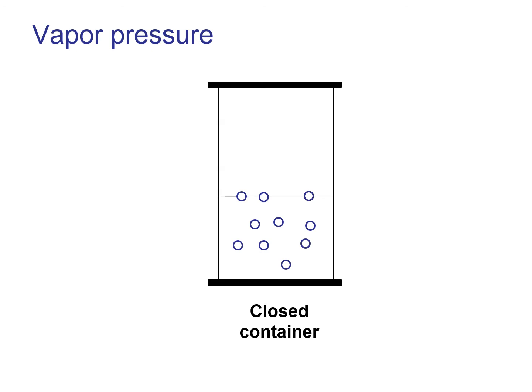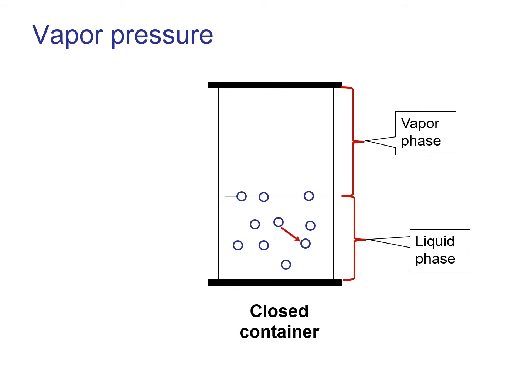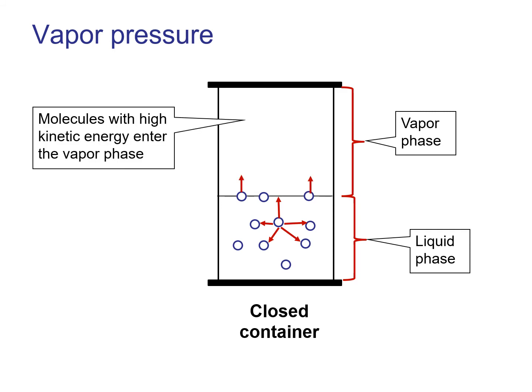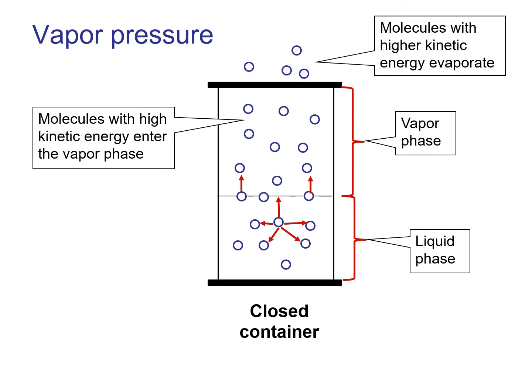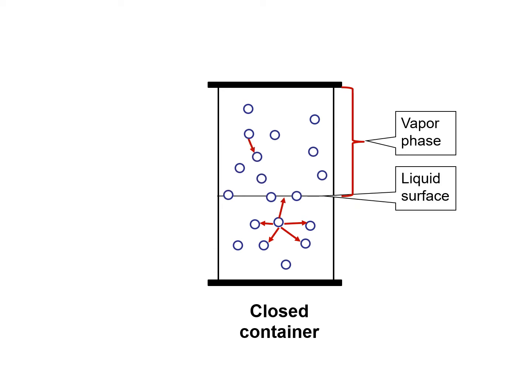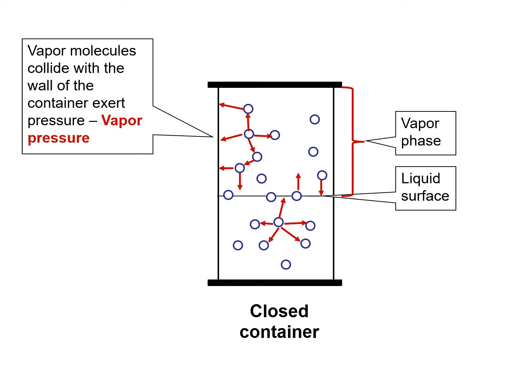What is vapor pressure? Let's say we have a closed container which contains liquid and vapor. Molecules in the liquid phase will collide with each other. The molecules with high kinetic energy can overcome the attraction between them to enter the vapor phase. The collision of the molecules will continue in the vapor phase, and the molecules with higher kinetic energy will overcome the attraction between them and evaporate. In the vapor phase, the vapor molecules will collide with each other, the liquid surface, and with the wall of the container. When the vapor molecules collide with the wall of the container, they exert a pressure which is called vapor pressure.